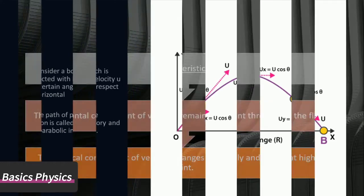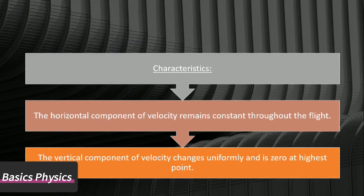The horizontal component of velocity remains constant throughout the flight because there is no force acting on the projectile horizontally. The vertical component of velocity changes uniformly and is zero at the highest point because there is gravitational force acting on the body vertically.